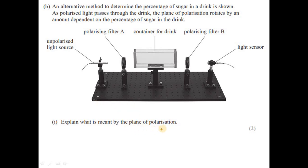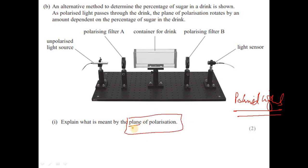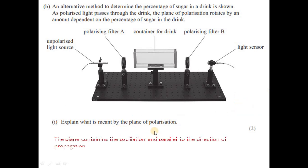Note: they are not asking for the definition of polarized light. They are asking about the plane of polarization. The plane of polarization is the plane that contains the oscillations and is parallel to the direction of wave travel — it is the plane along which the oscillations occur.